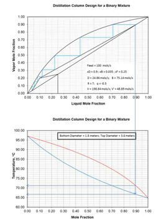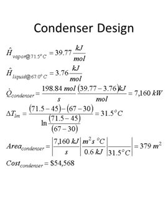With temperatures in and out of the condenser known, we perform an energy balance to calculate the condenser area. The specific enthalpy of vapor at 71.5 degrees C is slightly less than 40 kJ/mol, and the liquid at 67 degrees C is 3.76 kJ/mol. The total energy removed by the condenser is the total vapor molar flow rate of 198.84 moles per second times the enthalpy change (39.77 minus 3.76), giving 7,160 kilowatts. The log mean temperature difference calculates to be 31.5 degrees Celsius.